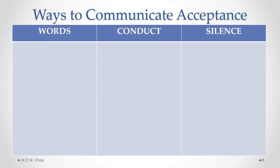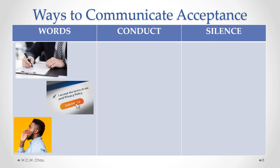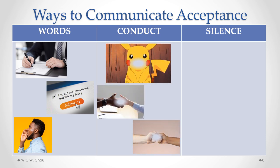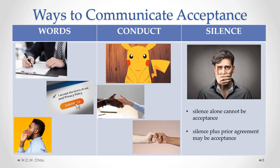To be effective, an acceptance needs to be communicated by the offeree to the offeror. That communication can be done by words, conduct, and sometimes silence. Words are the most direct way — they can be in writing on paper, in writing electronically online, or verbally. Conduct can be as simple as a nod of the head, a handshake, or any other action that can be reasonably interpreted to be an acceptance.